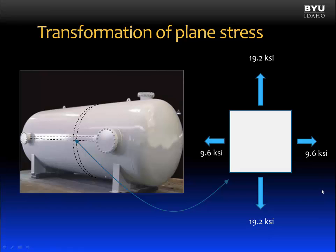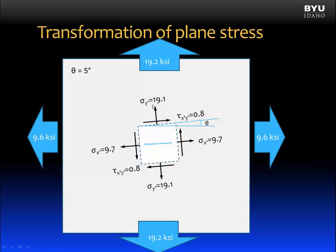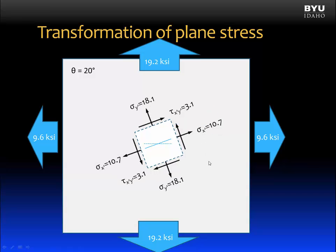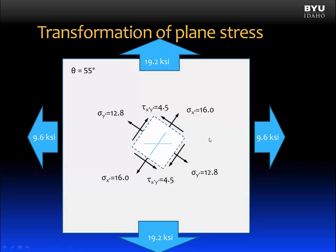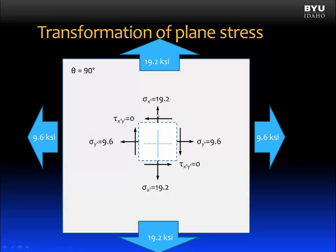To find the shear stress, we can use the stress transformation equations for plane stress. Here is the volume element rotated at an angle theta of zero degrees, aligned in the longitudinal and circumferential directions. If we rotate how we draw our element, the stresses on the faces change — a shear stress shows up. As we continue to rotate, the shear stress gradually increases until at 45 degrees it reaches a maximum. At that point, the normal stresses on each face are all equal. Continuing to rotate, the shear stresses decrease until a full 90-degree rotation returns us to the original configuration.